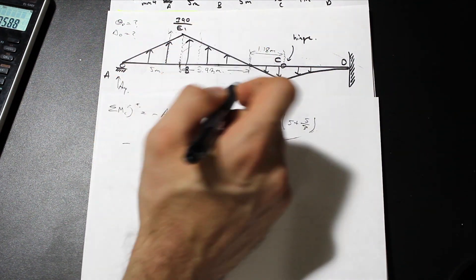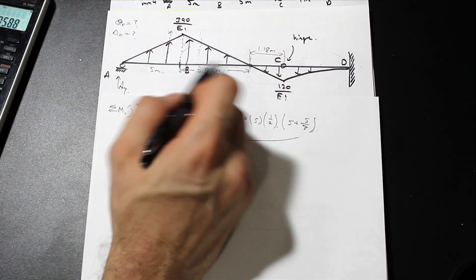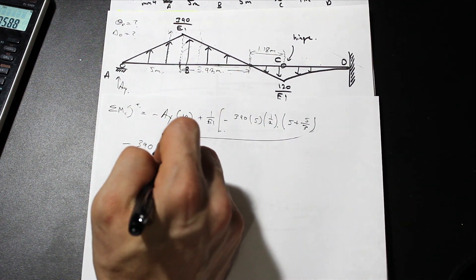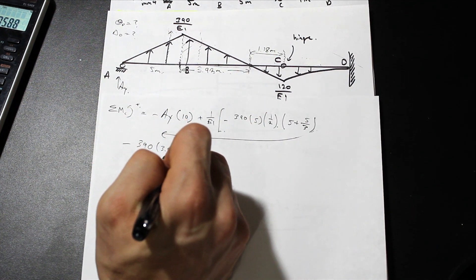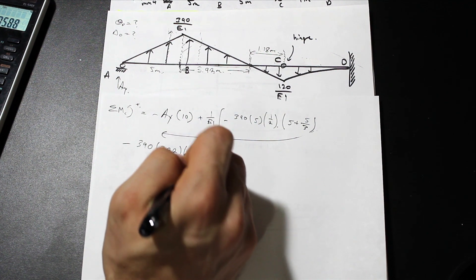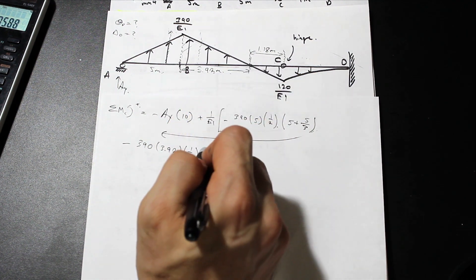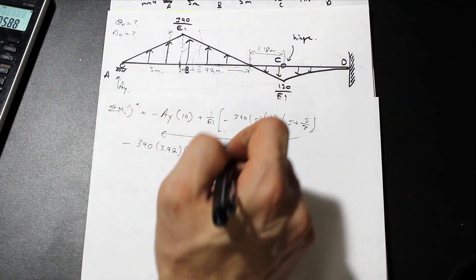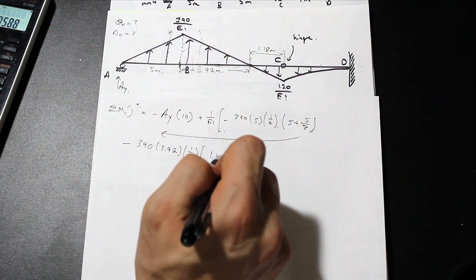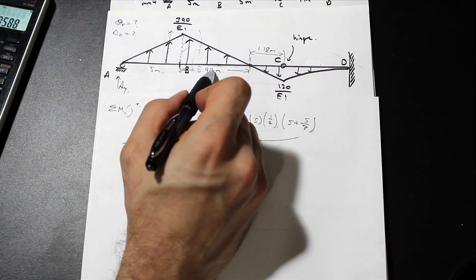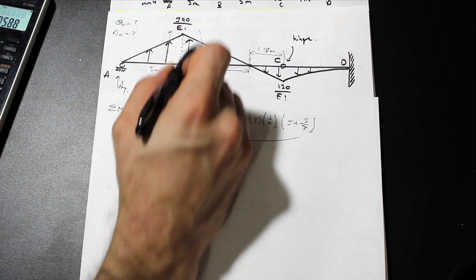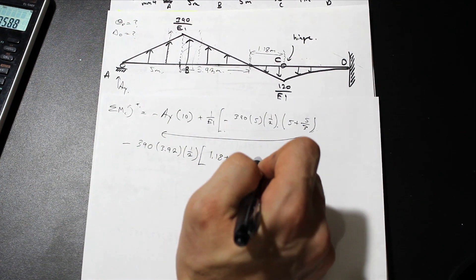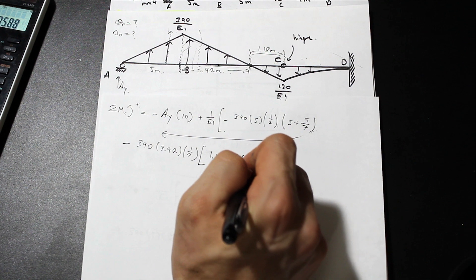For the next triangle, we have 390 times 3.92 times one-half, multiplied by the distance to its centroid: 1.18 plus 3.92, and then two-thirds of 3.92.